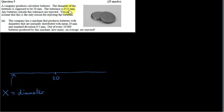Let's look at the range of acceptable values. If the tolerance is 0.25, then the maximum acceptable diameter is 20 plus 0.25, which is 20.25. And the minimum acceptable value is 20 minus 0.25, which is 19.75.